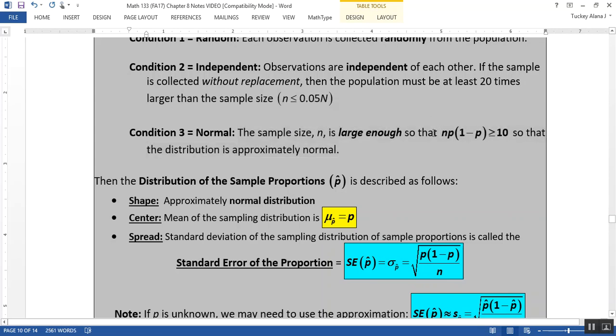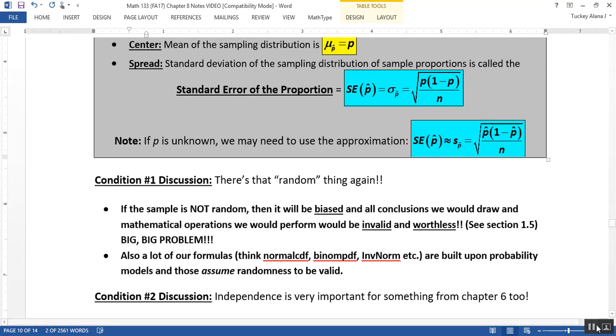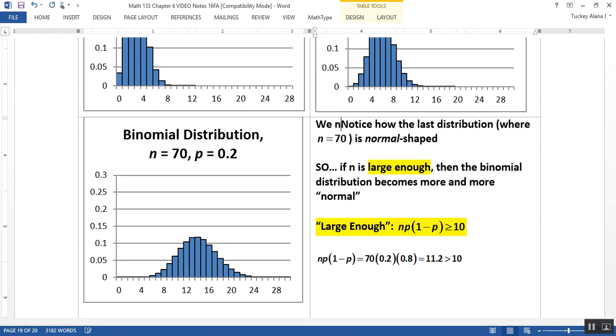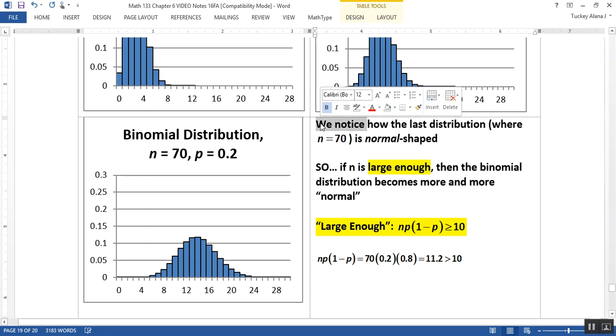So as n gets larger and larger, the shape of the distribution becomes normal. That's what we mean when we look at condition three - the sample size must be large enough to make it so that binomial distribution has a normal shape. That will happen when n times p times (1-p) is greater than or equal to 10.